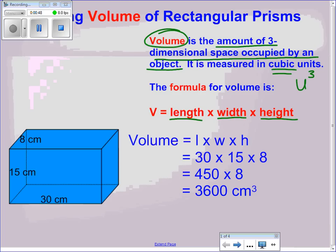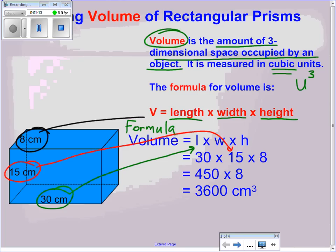In our example here, our volume, once again the formula for the volume is length times width times height. In our example, 30 centimeters is our length, 15 centimeters is our width, and finally 8 centimeters is our height. So again in cubic units, we have three measurements or three dimensions.